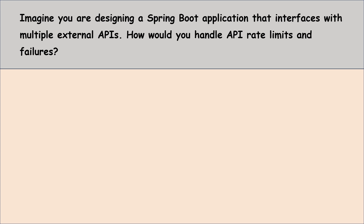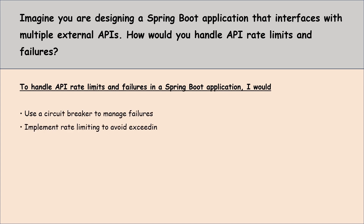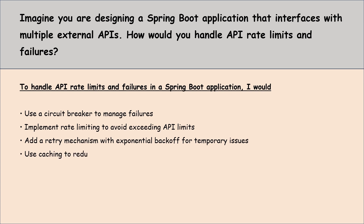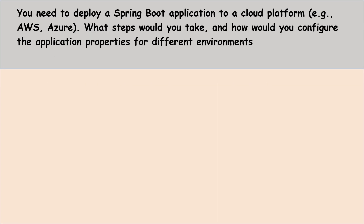Imagine you are designing a Spring Boot application that interfaces with multiple external APIs. How would you handle API rate limits and failures? To handle API rate limits and failures I would use a circuit breaker to manage failures, implement rate limiting to avoid exceeding API limits, add a retry mechanism with exponential backoff for temporary issues, and use caching to reduce the number of requests. This approach helps keep the application reliable and efficient.